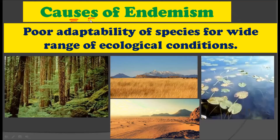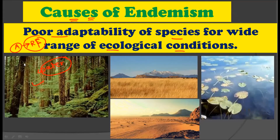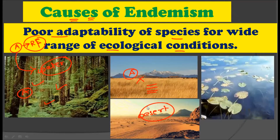Another cause of endemism is poor adaptability of species to a wide range of ecological conditions. For example, species A is very well adapted to the rainforest because it requires a large amount of water, and it gets this large amount of water in the rainforest, which is why species A can thrive and survive there. But such a species is not found in grasslands because there is no large availability of water in the grassland, nor in deserts where there is really no water at all. The next ecological range is an aquatic habitat.